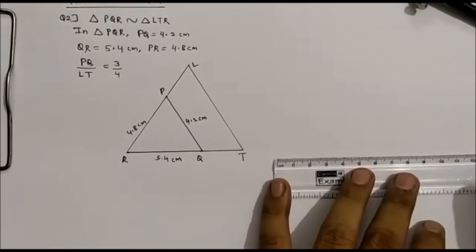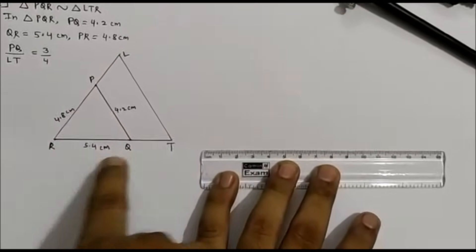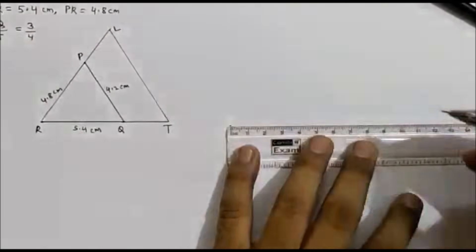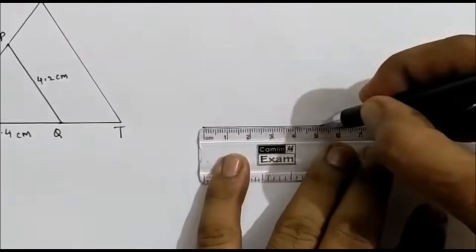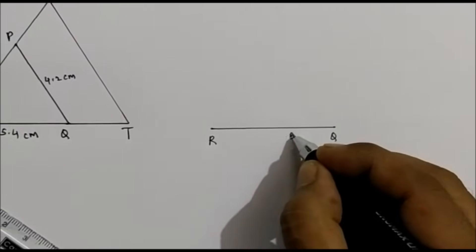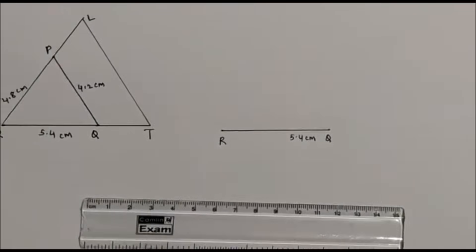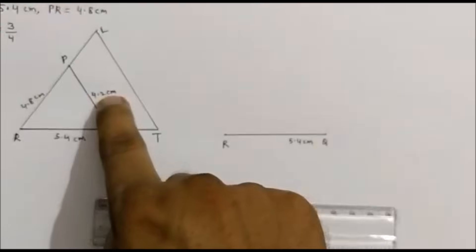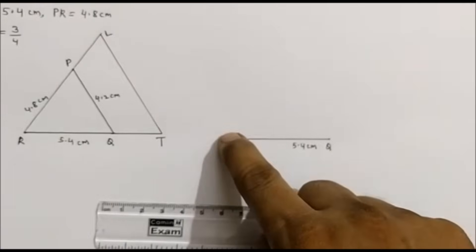Now let's start with the actual construction. First we are going to construct triangle PQR where RQ is 5.4 cm. Students you can see — RQ 5.4 cm has been drawn. This is 5.4 cm. Now take a distance of 4.8 cm and from point R you cut an arc.